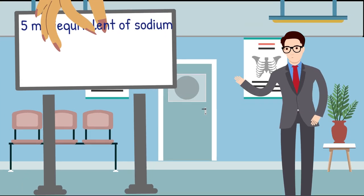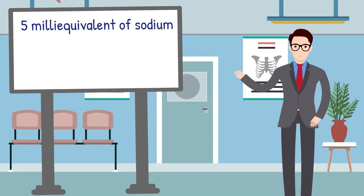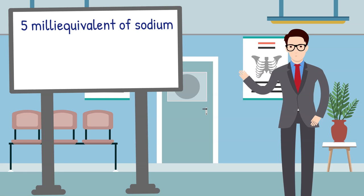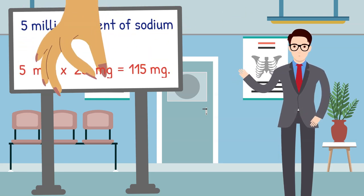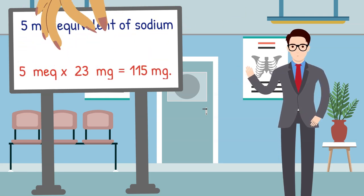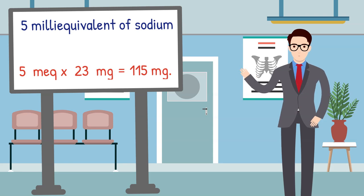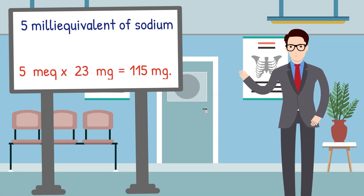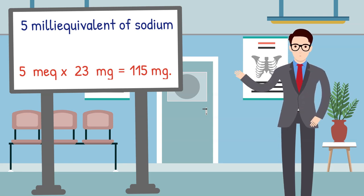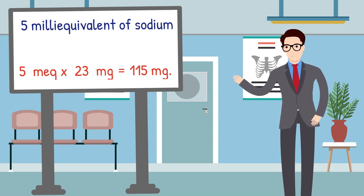For example, if you have 5 milliequivalents of sodium, the conversion to milligrams would be: 5 milliequivalents times 23 milligrams equals 115 milligrams. Therefore, 5 milliequivalents of sodium is equivalent to 115 milligrams of sodium.